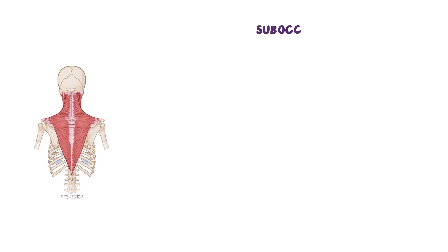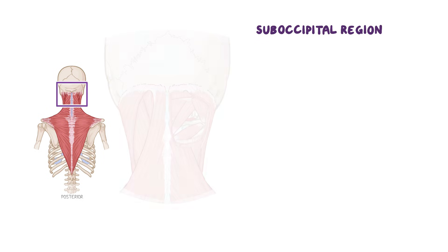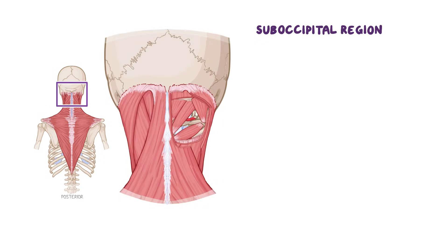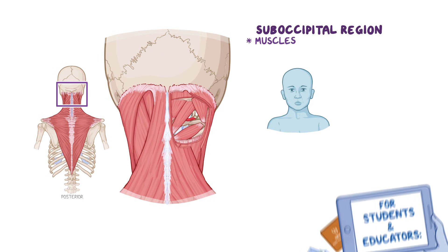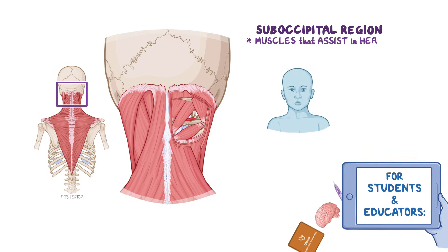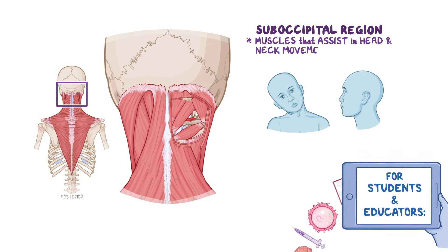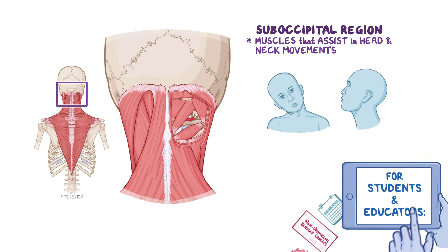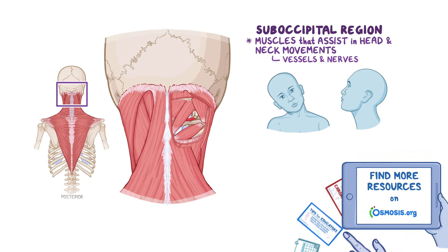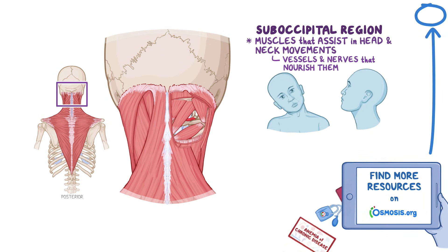You may think of the suboccipital region as just the back of the head. However, there's more to it than meets the eye. This region is home to several muscles that assist in various head and neck movements, as well as the vessels and nerves that nourish them.